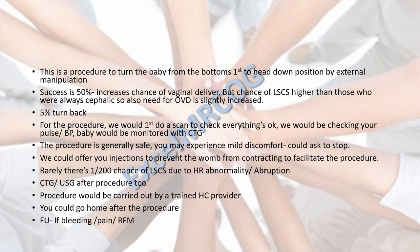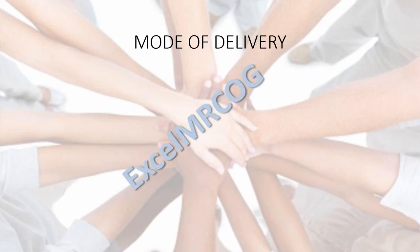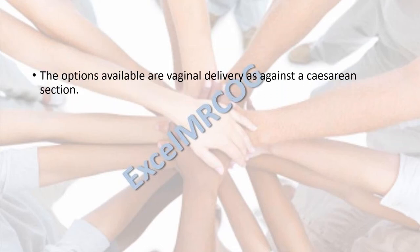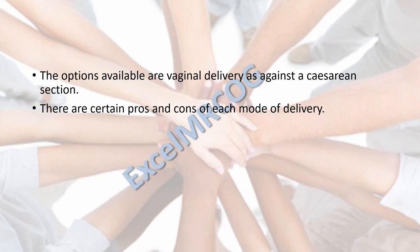Rarely — a 1 in 200 chance — you may need a cesarean section due to heart rate abnormalities in the baby, or the placenta may separate. After the procedure, your baby will be monitored for a while, an ultrasound may be repeated, and you can go home the same day. You would need to follow up with us if there is any bleeding, pain, or reduced fetal movements. Moving on, the mode of delivery options are vaginal delivery and cesarean section, each with certain pros and cons.